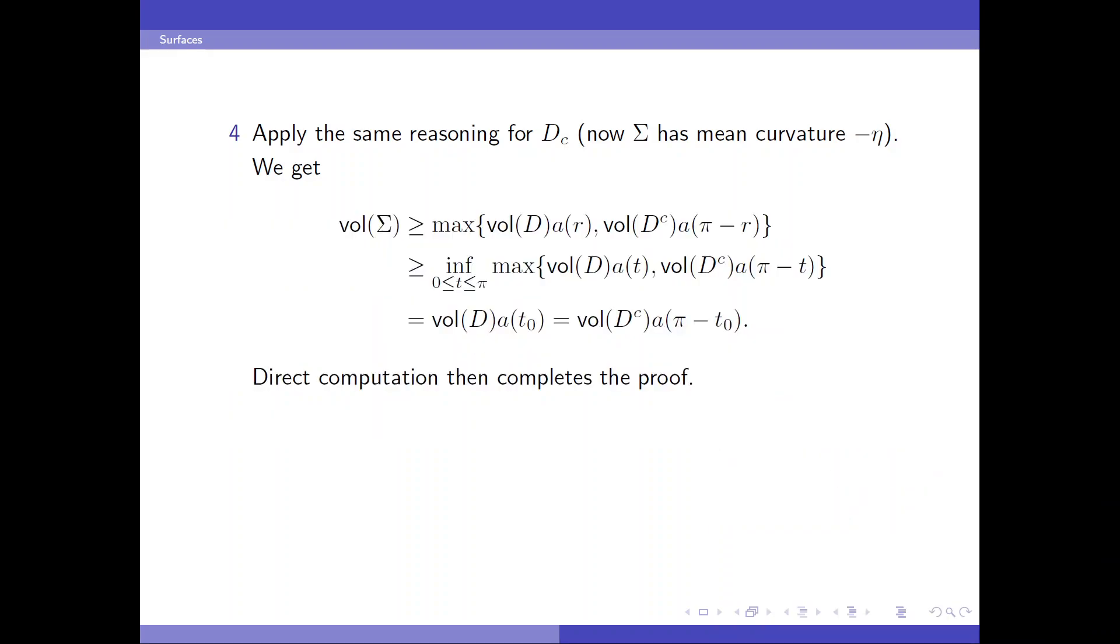So we get another inequality relating the complement of D and volume of sigma. Putting these two together, we know that volume of sigma is greater than the maximum of these two. And in particular, it's greater than the infimum of volume D times A(t) where t is taken for all t between 0 and pi. And this infimum is achieved for the t0 so that the two elements are the same. So now, using this relation and some direct computation can complete the proof.